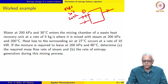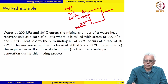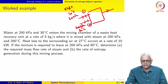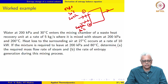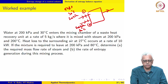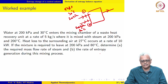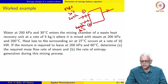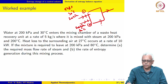It is mixed with steam at the same pressure of 200 kPa and 200 degree Celsius, which we label as state 2. Heat loss to the surrounding air at 27 degree Celsius occurs at the rate of 10 kilowatts, so Q dot is given to be 10 kilowatts.